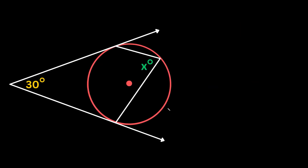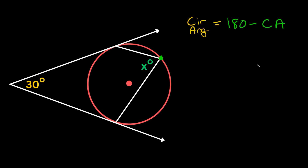Here's our next example. This time we're given the circumscribed angle — it's 30 degrees — and we're looking for an inscribed angle. An inscribed angle is a little different from a central angle because the vertex of this angle is on the edge of the circle; it doesn't run through the center, it touches the edge of the circle. We can still use that same general formula, but we don't have the central angle directly. The central angle would run from one end to the other through the center of the circle.